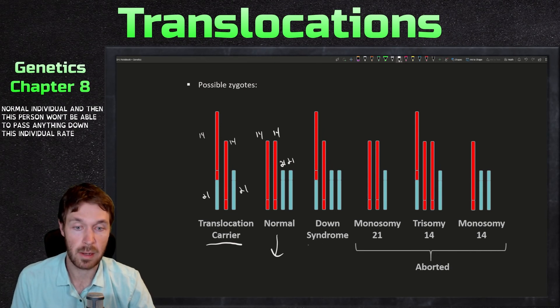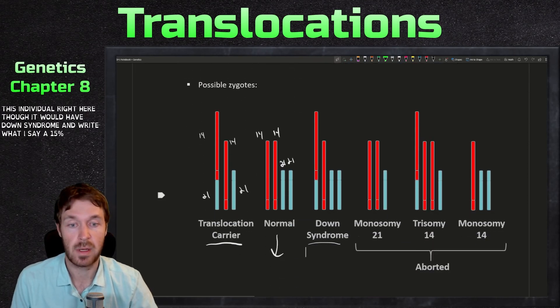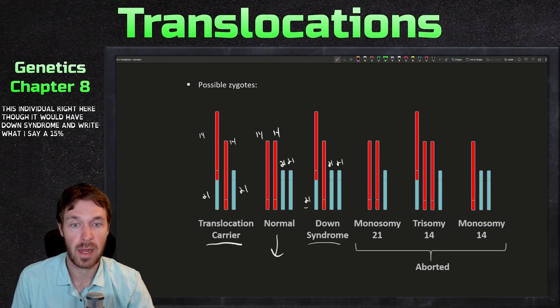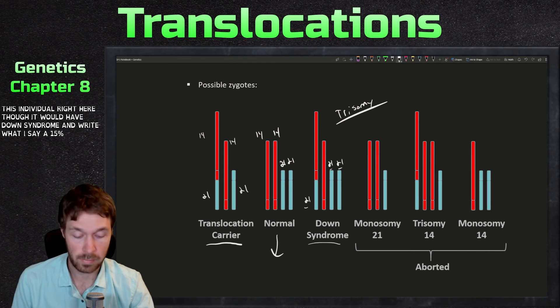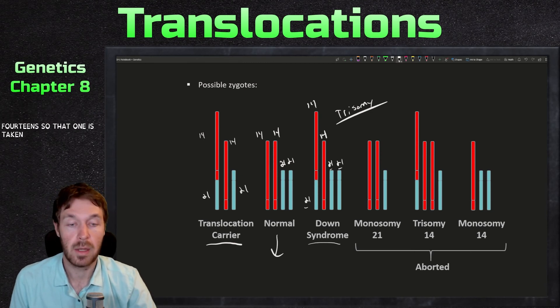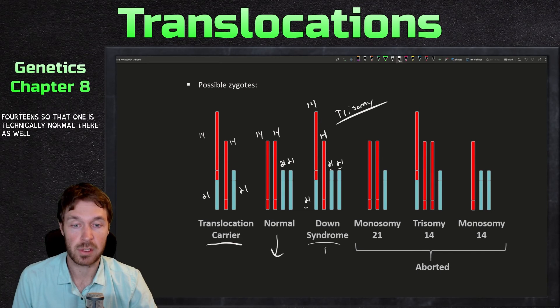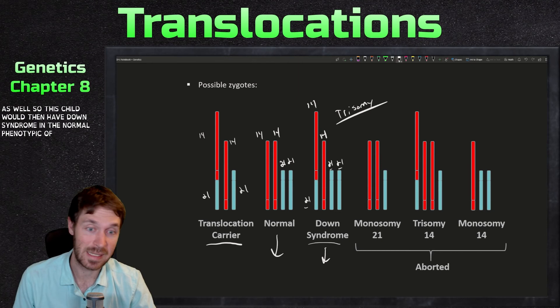This individual right here though would have down syndrome. And they're like, what'd I say? A 15% chance of this occurring. So here's a 21, here's a 21, and then here's a 21. So there is a trisomy and that's what causes down syndrome. So that's three chromosomes of a particular number. And then there are two 14s. So that one is technically normal there as well. So this child would then have down syndrome and the normal phenotypic effects that down syndrome shows.